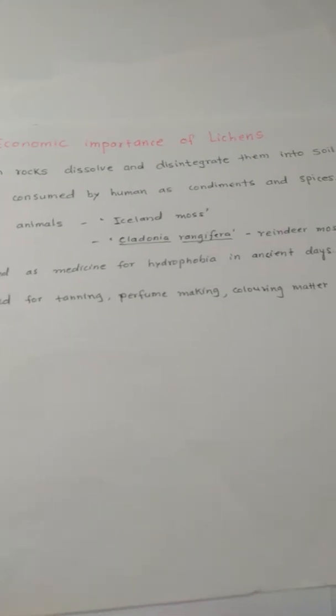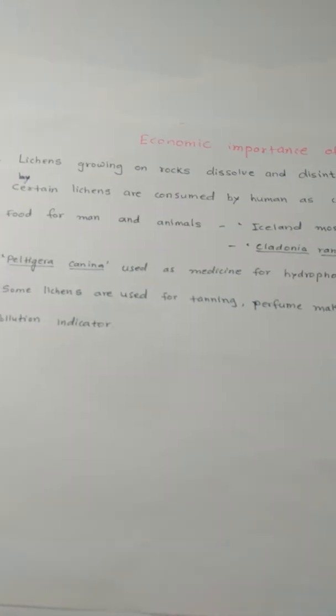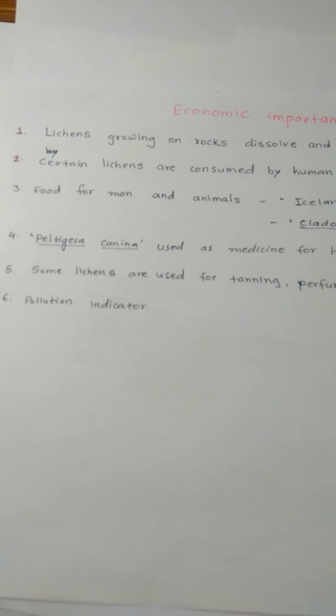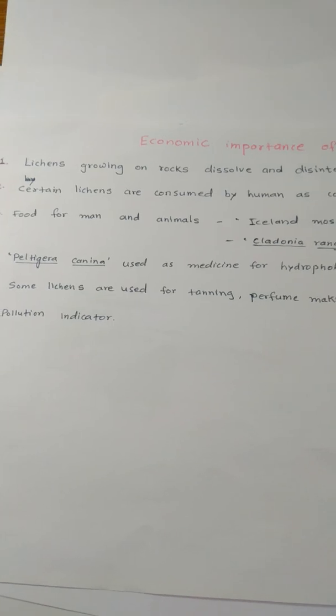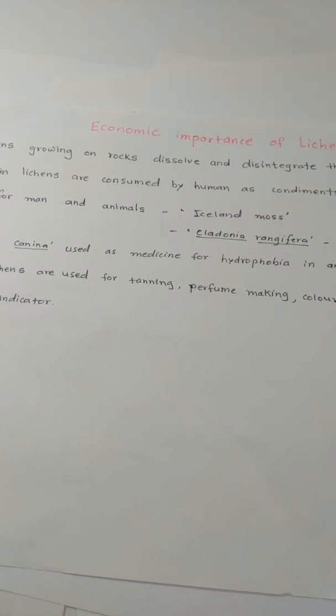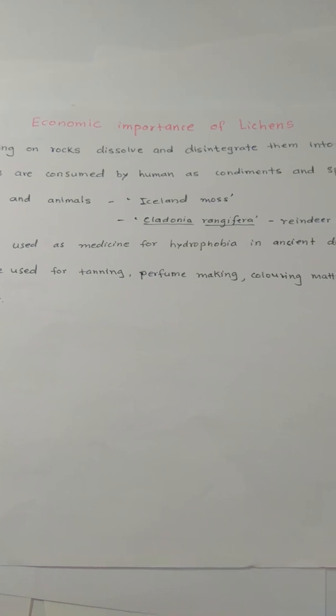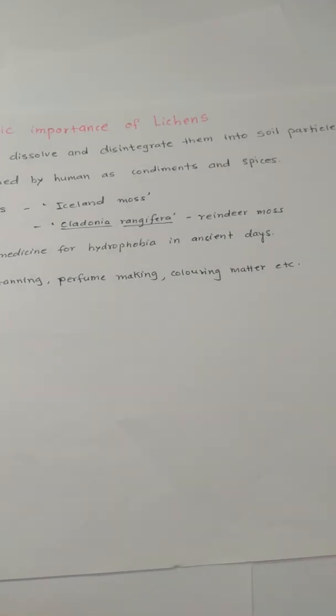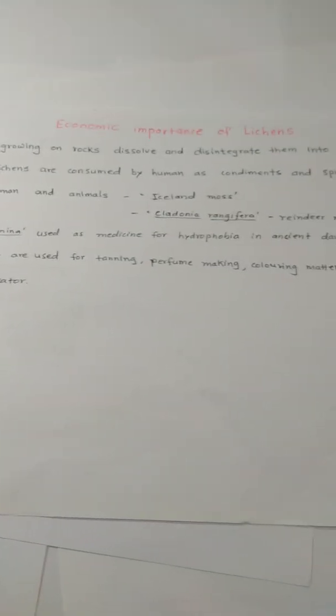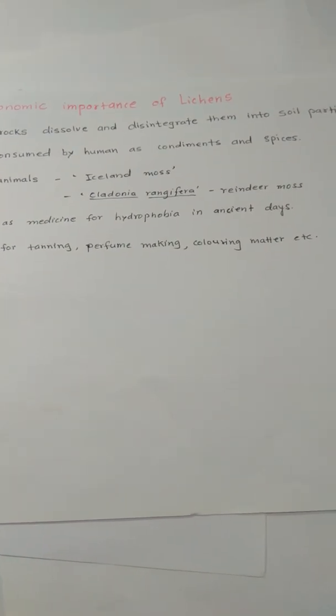Certain Lichens are consumed by humans as condiments and spices — especially the Foliose Lichen called Dagarpul. Lichens also serve as food for humans and animals; Iceland moss is used as food during famines and as fodder for animals. For example, Cladonia rangifera, known as reindeer moss, can grow up to 20 centimeters in very cold and extreme climatic conditions and is a food source for reindeer.